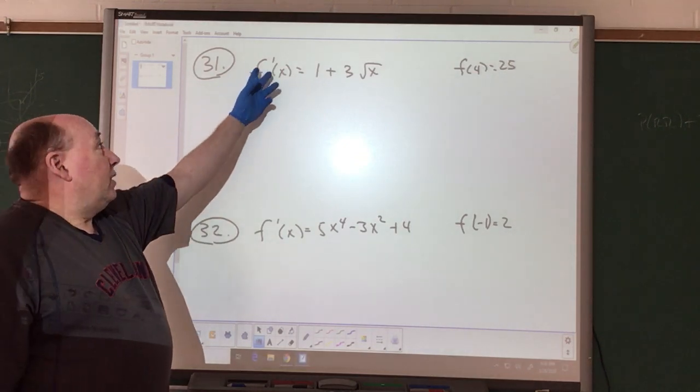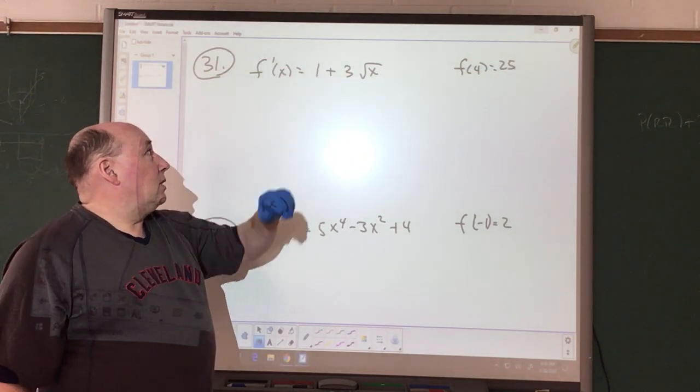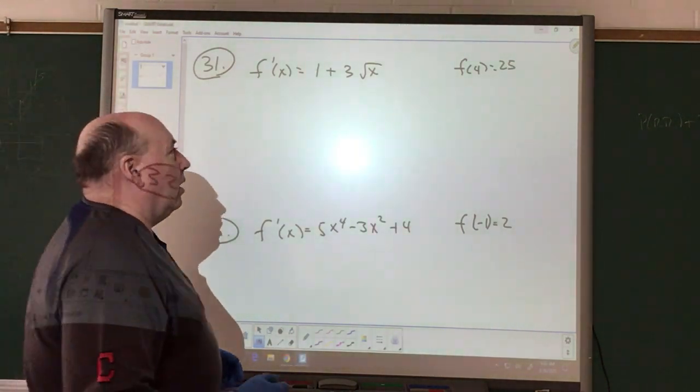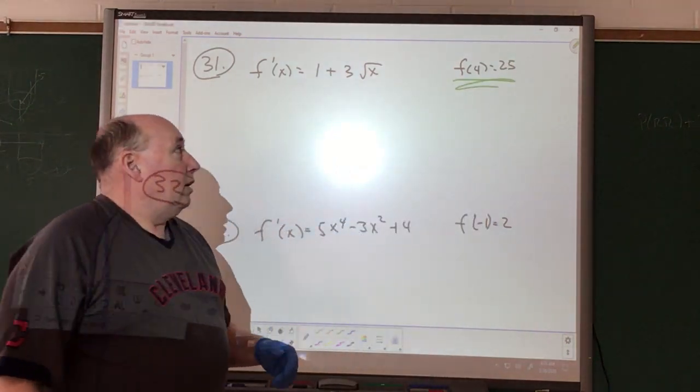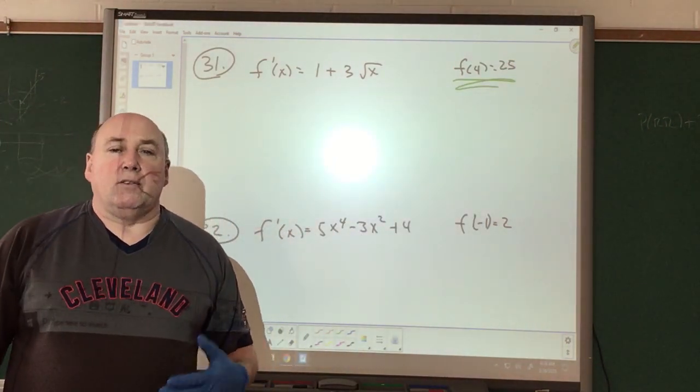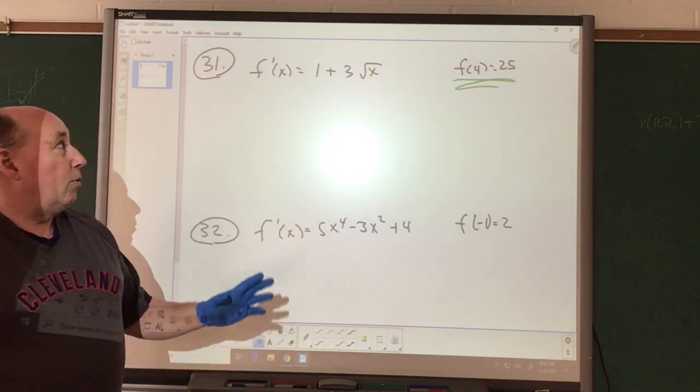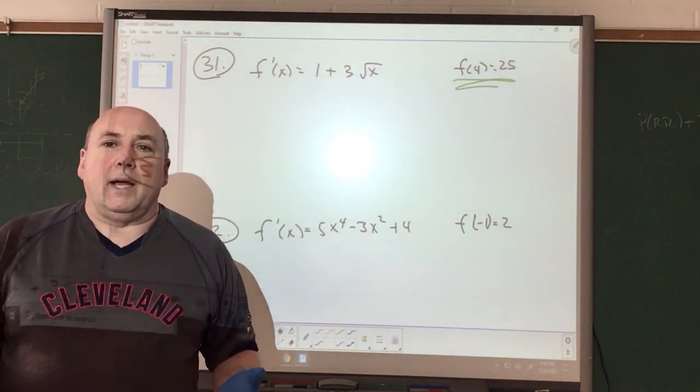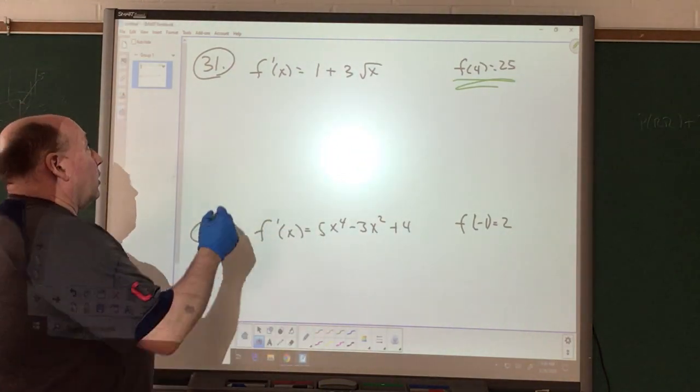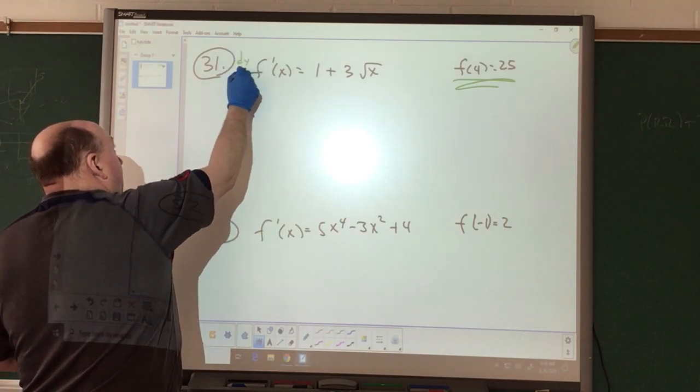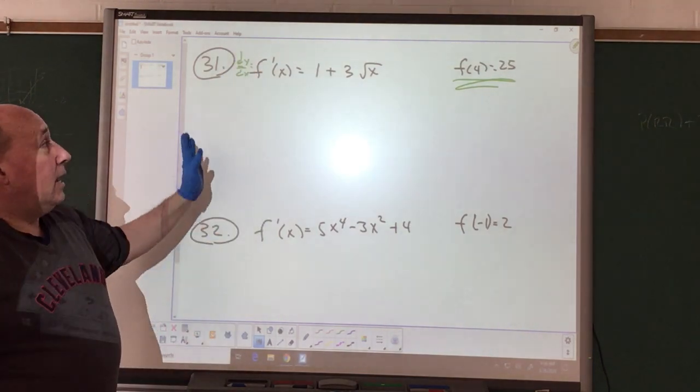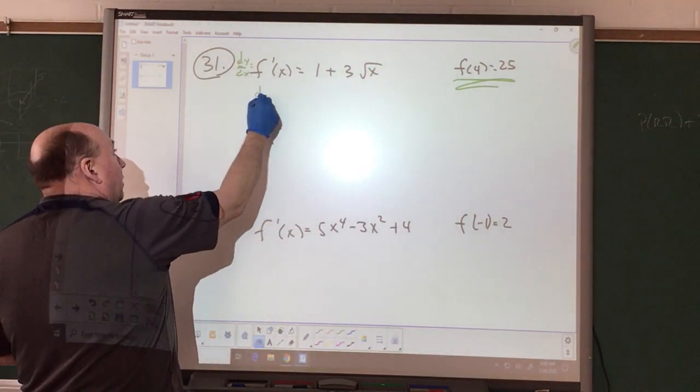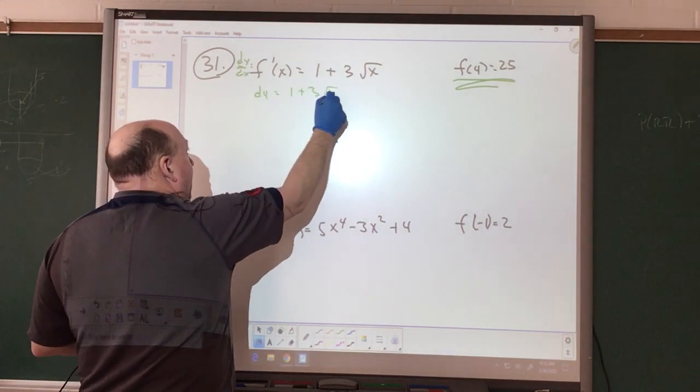Problem 31. We have the derivative is equal to 1 plus 3 square root of X. We want to determine what the function is. We're also given an initial condition of f of 4 equals 25. We want to be able to calculate a function. We talked about yesterday where we had separation of variables. We can also write this as dy over dx. And we can multiply the dx over to the other side. So dy equals 1 plus 3 square root of X dx.